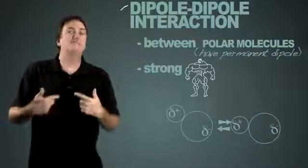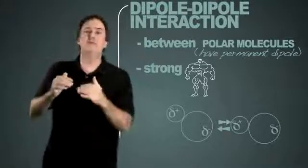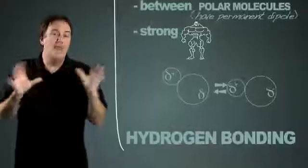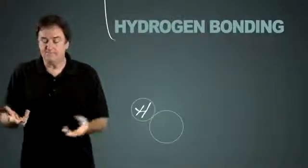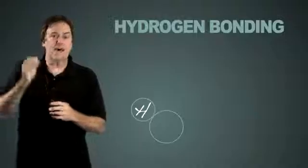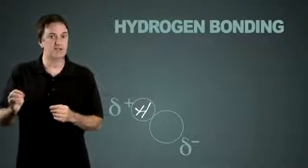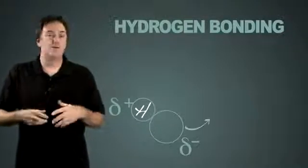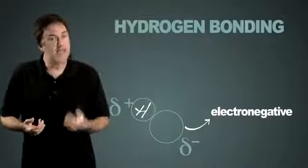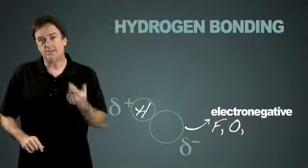Now, we have a subset of that that's actually the strongest version of that. They're even stronger than a regular dipole-dipole. And we call it hydrogen bonding, and it's really because it involves hydrogen being the partial positive part of this molecule. Anytime hydrogen is covalently bound to a very electronegative element, and I'll be specific here, it has to be bound to fluorine, oxygen, or nitrogen.